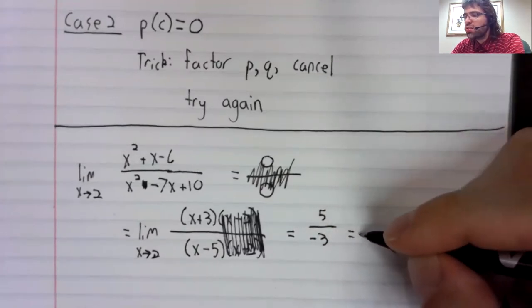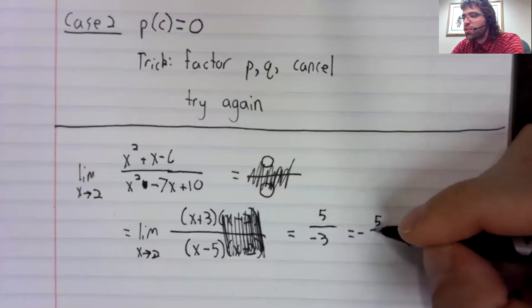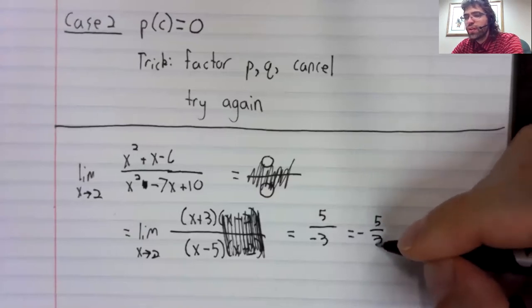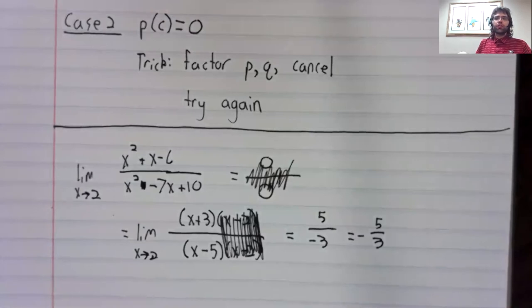And this time, it doesn't give us a division by zero error. So, we have found our limit.